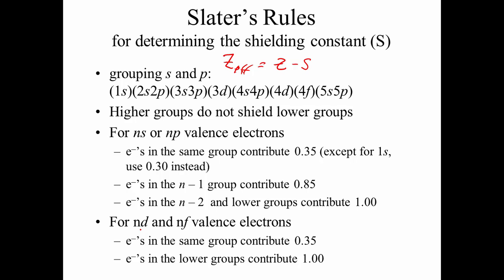However, if the electron we're considering its energy level is a d or f, they actually get shielded more. So how does that work out? If it's in the same, if you have like 5 electrons in the 4f, and we're just considering one of those electrons, then the other 4 shield by 0.35, and everything else below here is going to shield by 1, because d and f orbitals don't penetrate as well as s and p orbitals do.